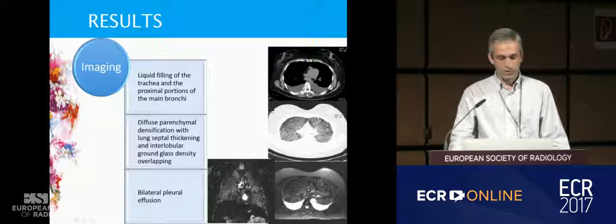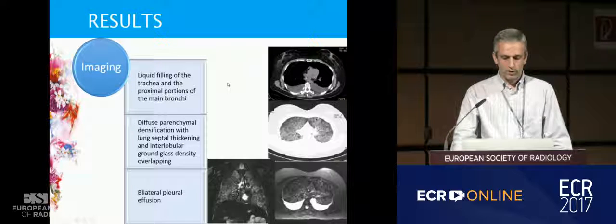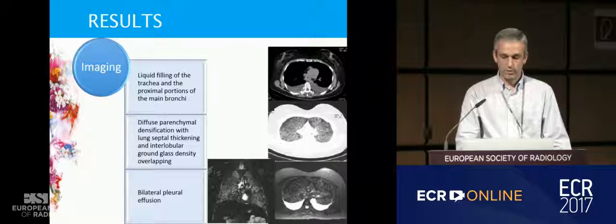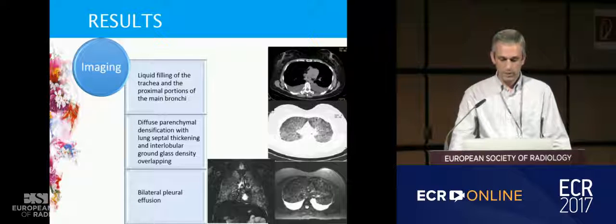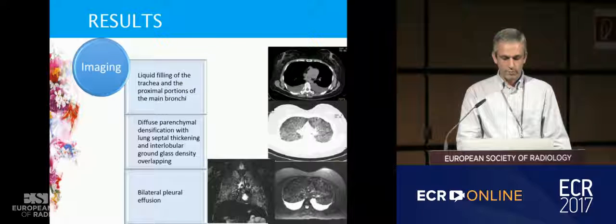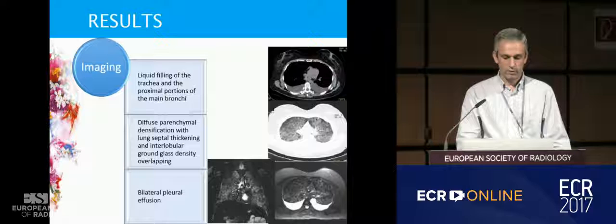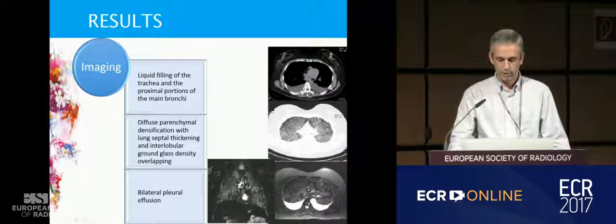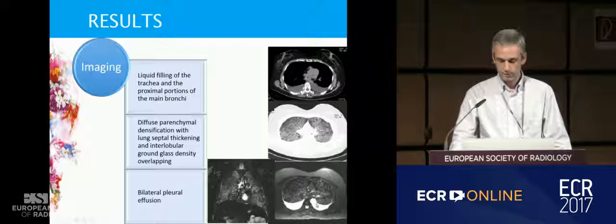In the thorax, we see the liquid filling of the trachea and proximal portions of the main bronchi. In the lung, there were a diffuse parenchymal densification with lung septal thickening and interlobular ground glass density overlapping and bilateral pleural effusion.